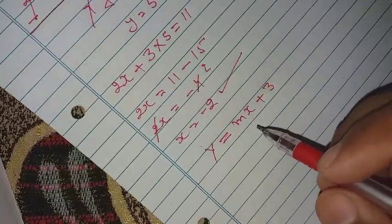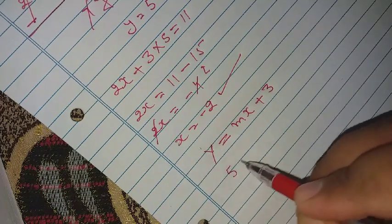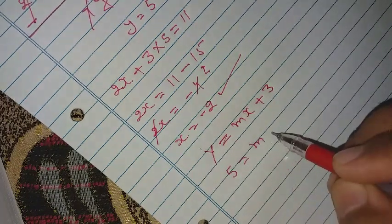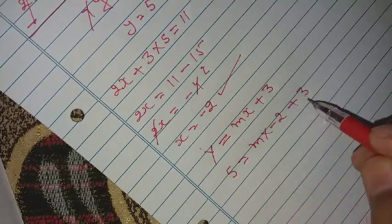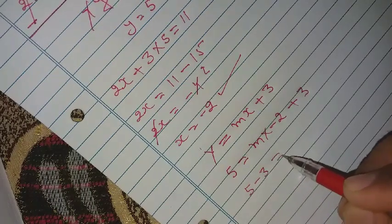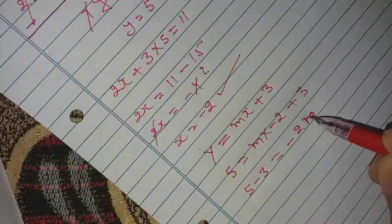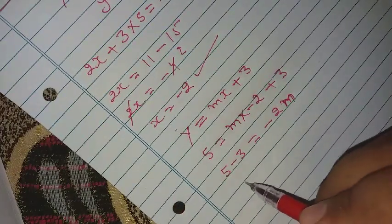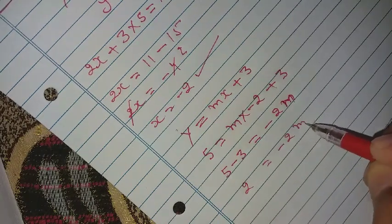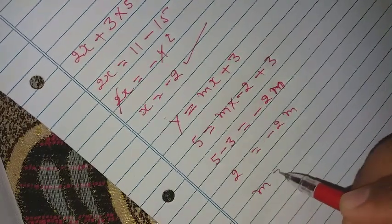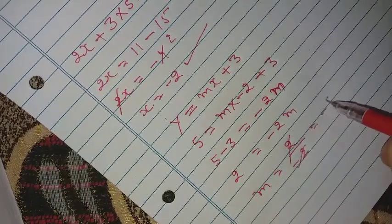So here we will put the value y means 5 equal to m times minus 2 plus 3. So 5 minus 3 equal to minus 2m. So 5 minus 3 is 2. We will get minus 2m. So m equal to 2 upon minus 2. We will get minus 1.